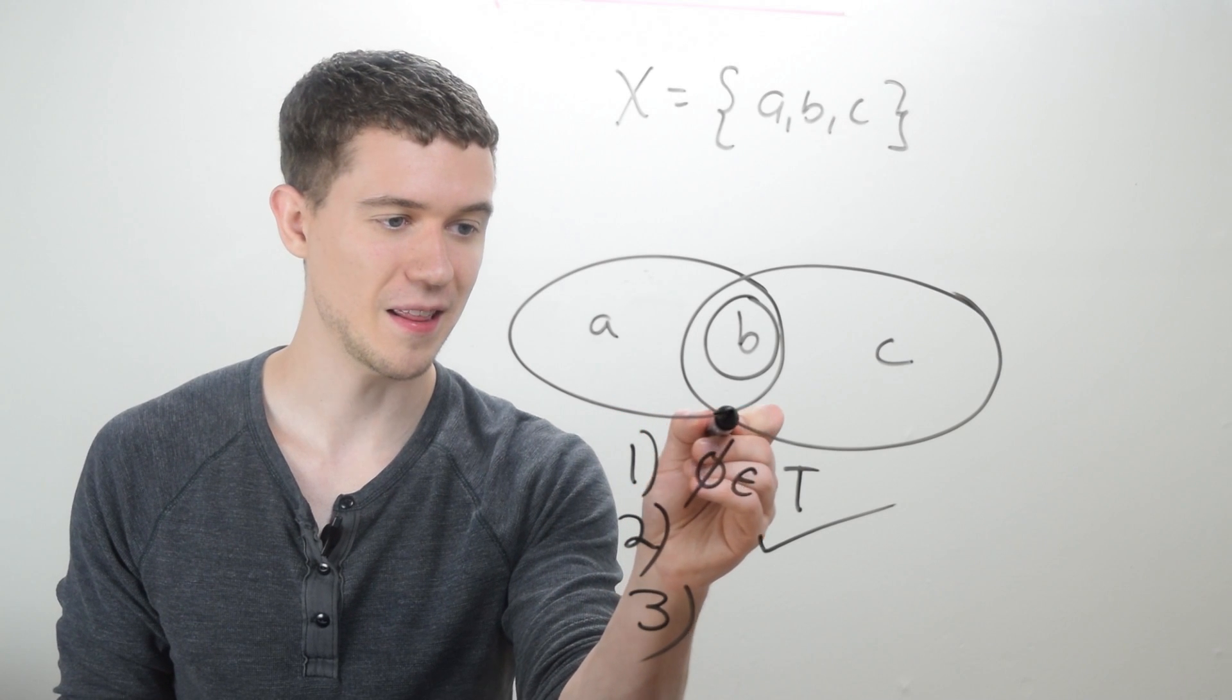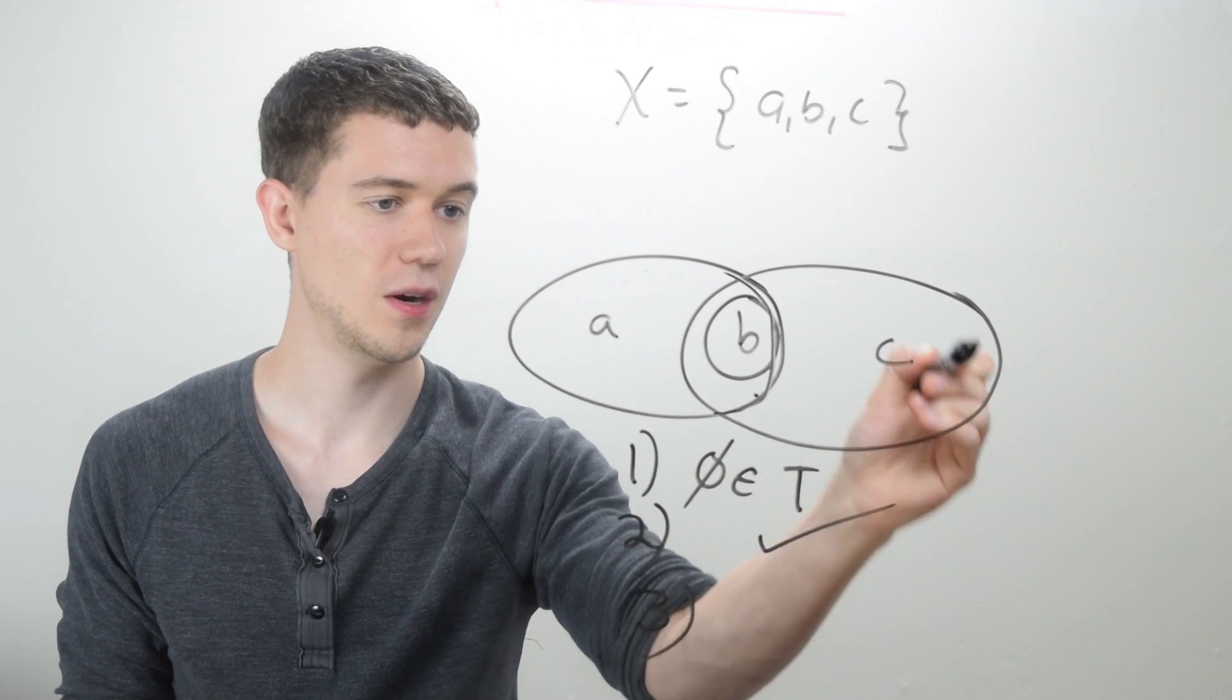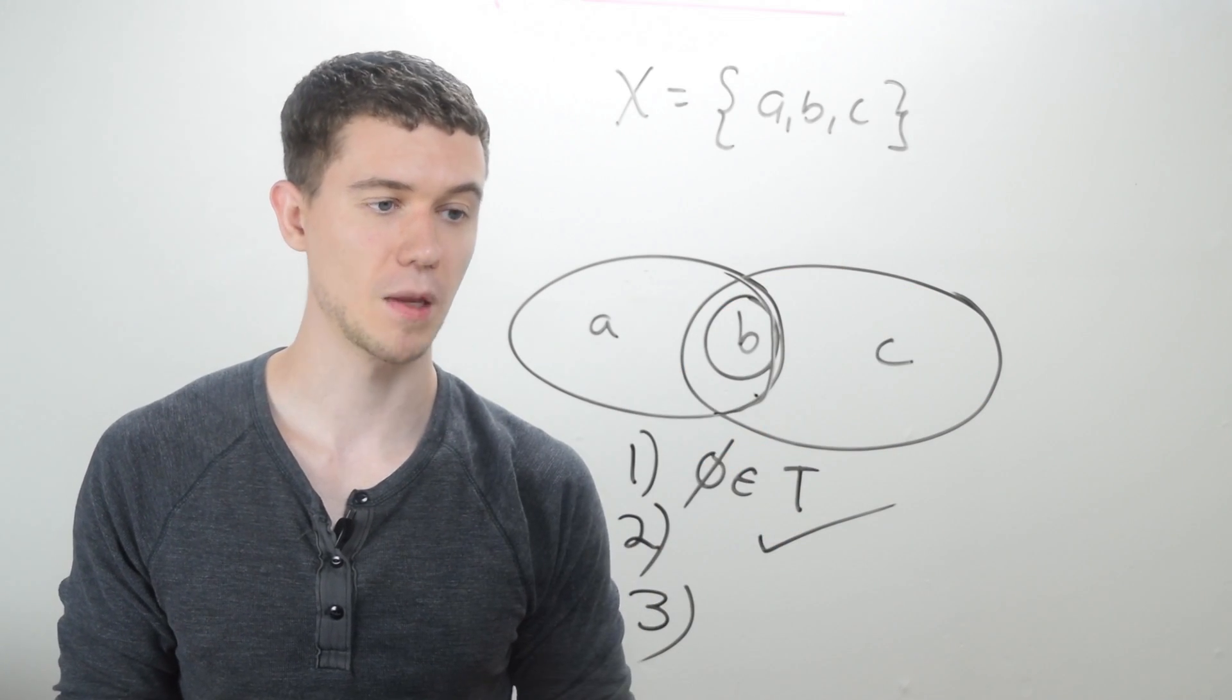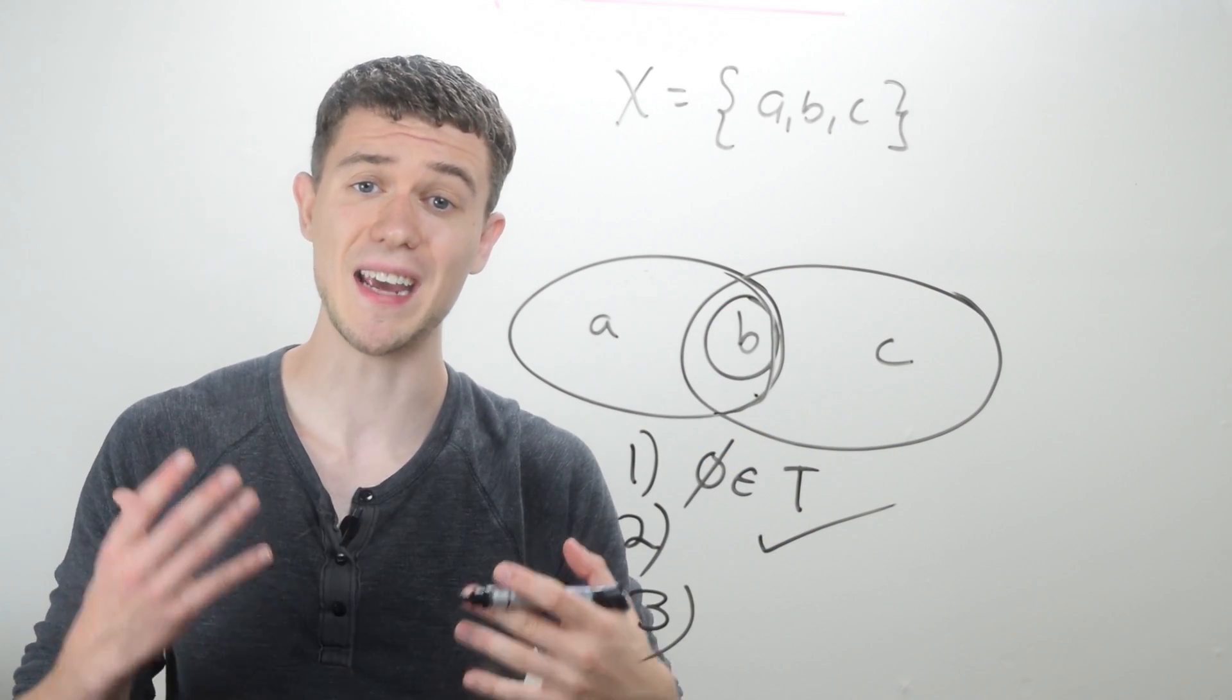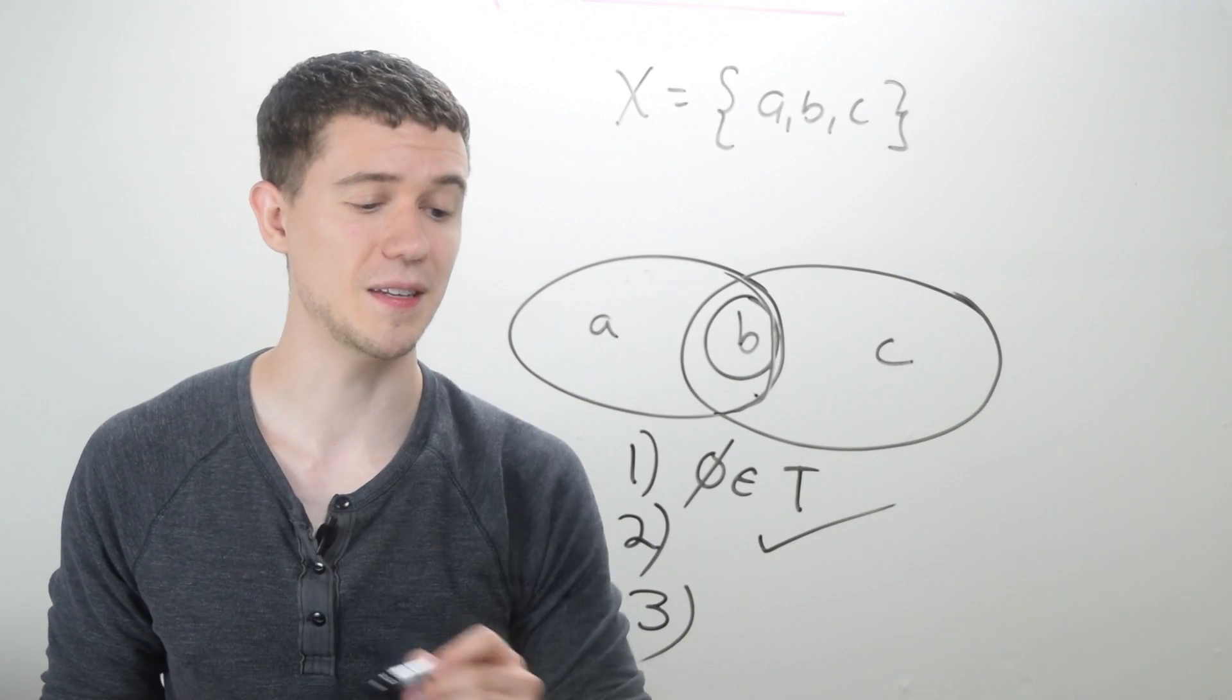If I take this circle around A and B, and I take this circle around B and C, then I have a set containing A, B, and C. But I don't have any set containing A, B, and C. So the third failed.